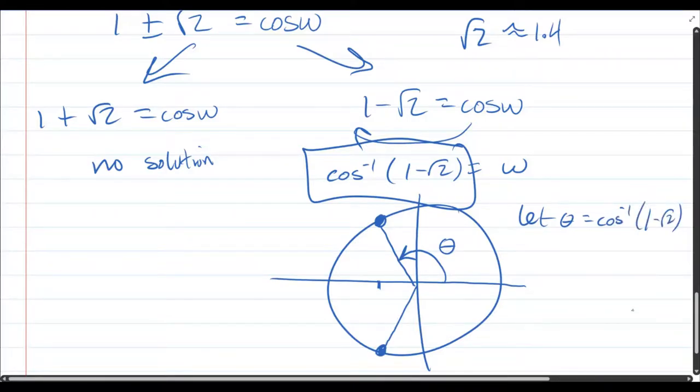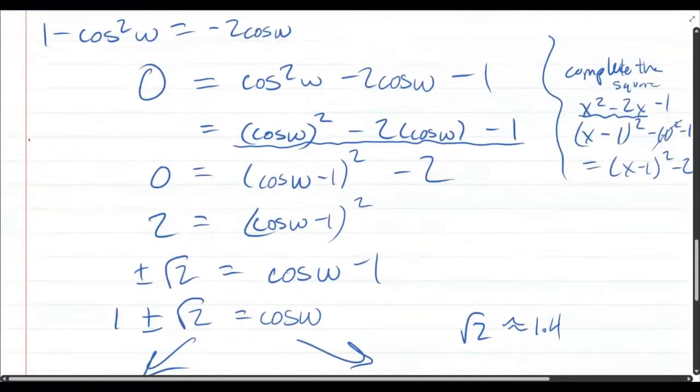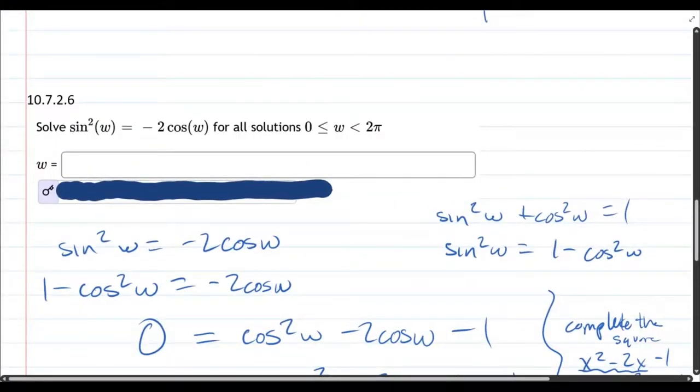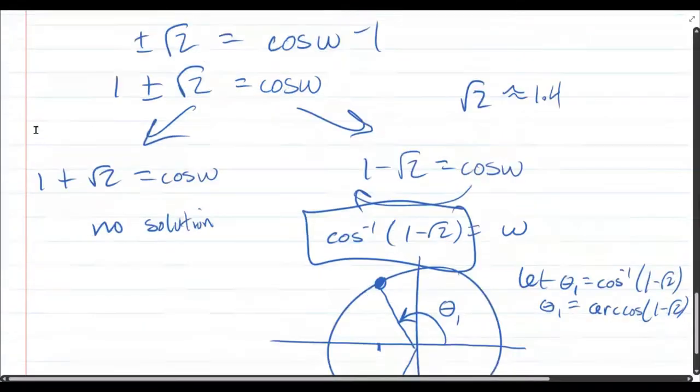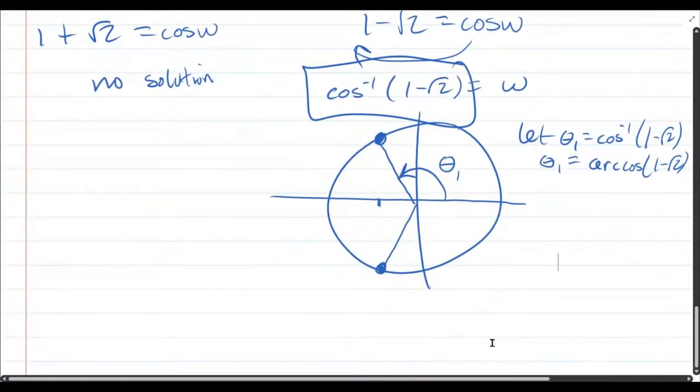So one of them is cos inverse one minus square root two. And of course, that's arc cos. So that'll be theta. Let me call it theta one. That's the first angle. Now, there's a second angle we're going to get as well, but we're going to have to work a little bit for that. I believe you can type in arc cosine one minus square root two on this homework question. Here's our restriction. Angle's got it between zero and two pi. So clearly, theta one's between zero and two pi.